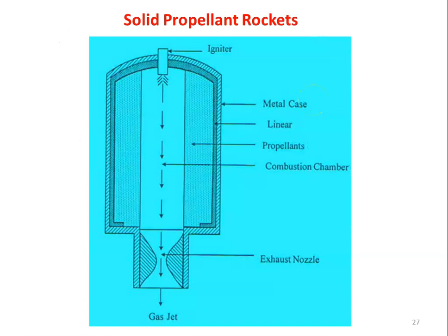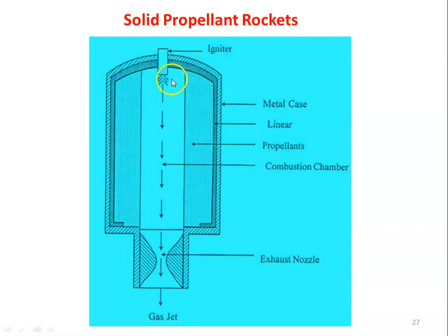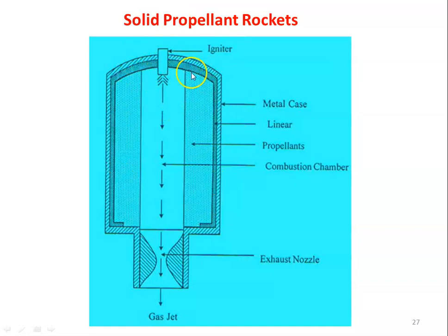This is the diagram of the solid propellant rocket. You may find a cylindrical metal case. Inside the metal case, we have a liner, then a layer of propellant. At the center, we have the combustion chamber. At the top of the cylindrical rocket, we have the igniter, and at the bottom, we have the exhaust nozzle. Inside the cylindrical metal case, we have a lining material.